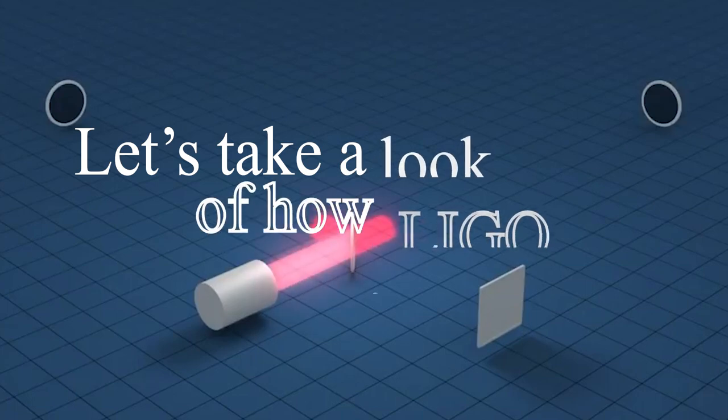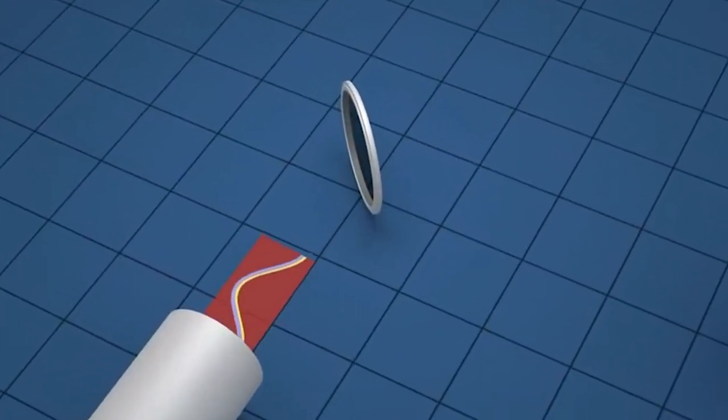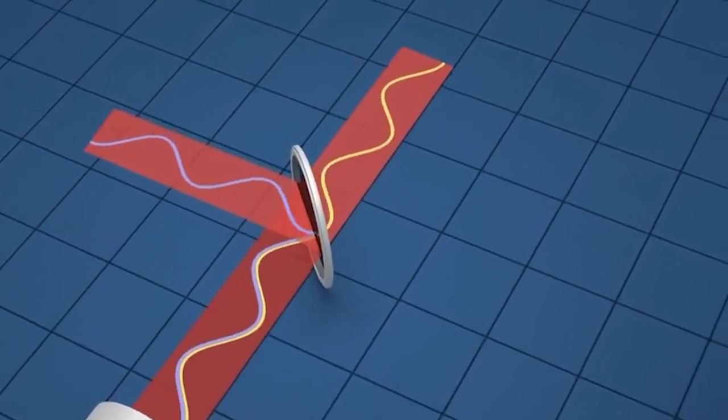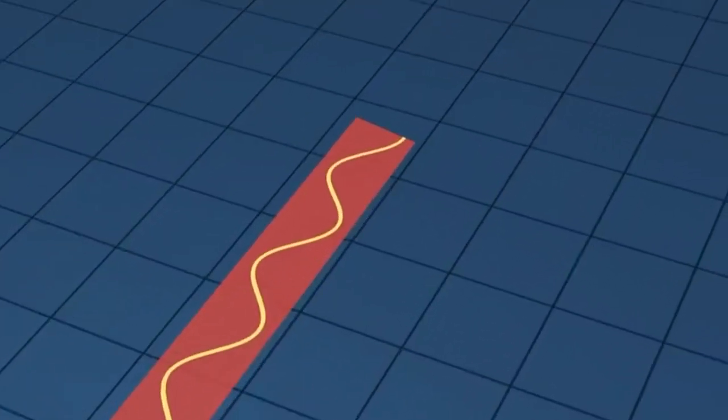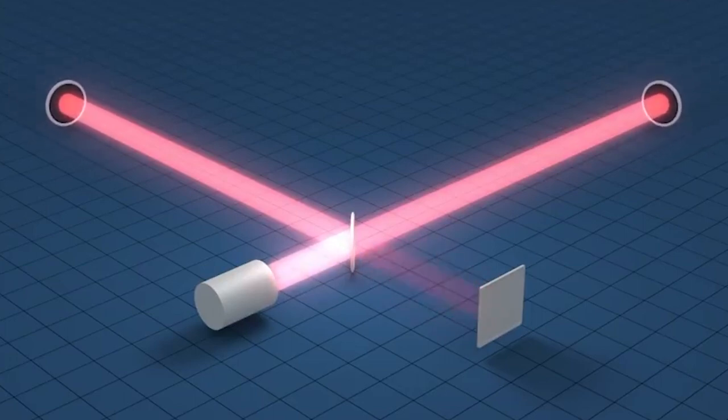And let's take a look at how the LIGO experiment works. The mysterious ripples in space-time known as gravitational waves move at the speed of light throughout our cosmos. Several experiments have been looking for them, predicted by Einstein exactly 100 years ago.